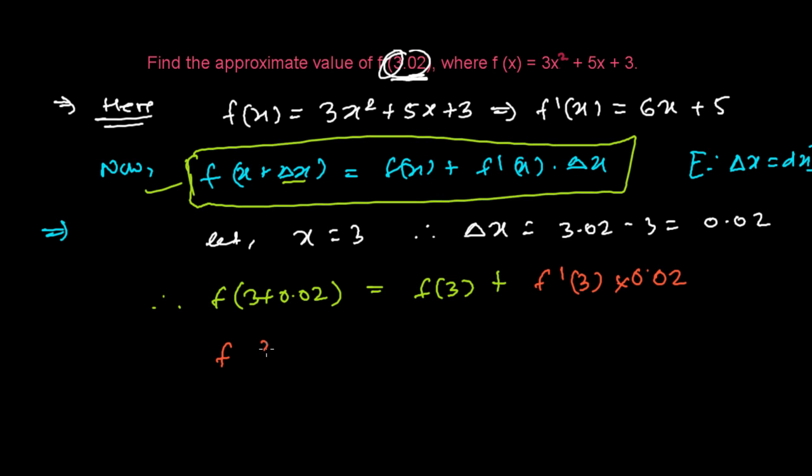Now f(3.02) is going to be f(3). f(x) = 3x² + 5x + 3, right? So what about if I'm replacing x by 3? If it is f(3), then it will be simply 3 squared, 5 times 3. So it's going to be 3 times 3² + 5 times 3 + 3.